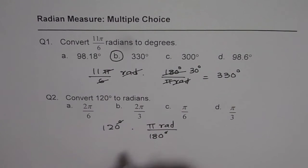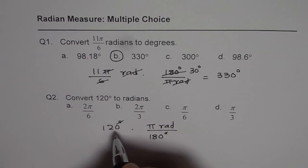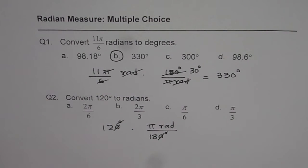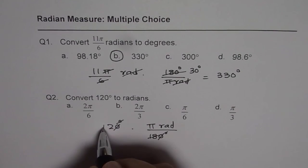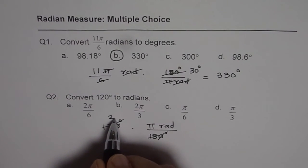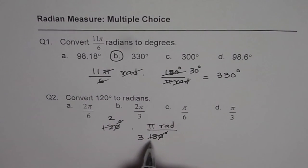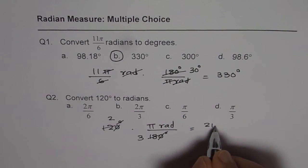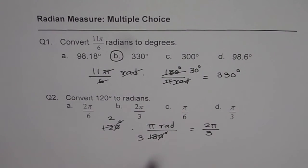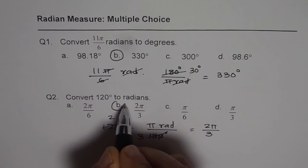Now these degrees, degrees cancel out. Do you see? You are left with units, radians. Let's simplify it further, dividing by 10. And then we can divide these by 6. 6 times 2 is 12 and 6 times 3 is 18. So we get 2π/3, which is also option B for us.